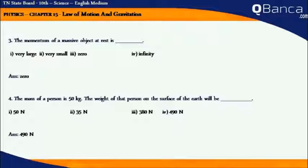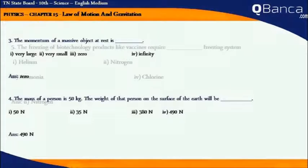The mass of a person is 50 kg. The weight of that person on the surface of the earth will be 490 Newton.